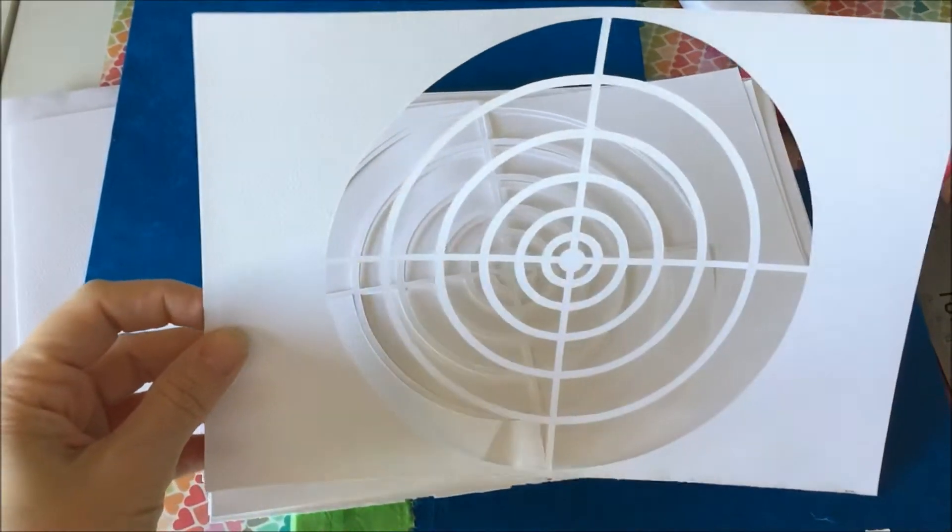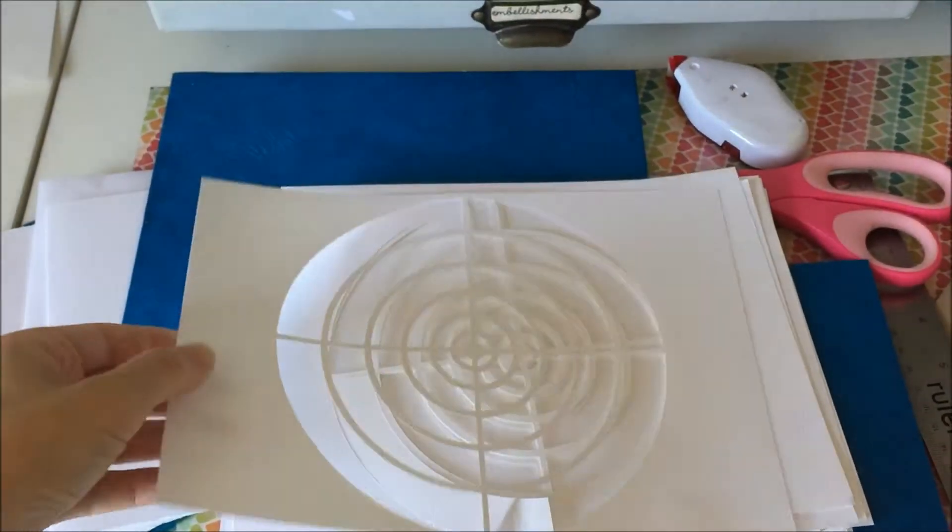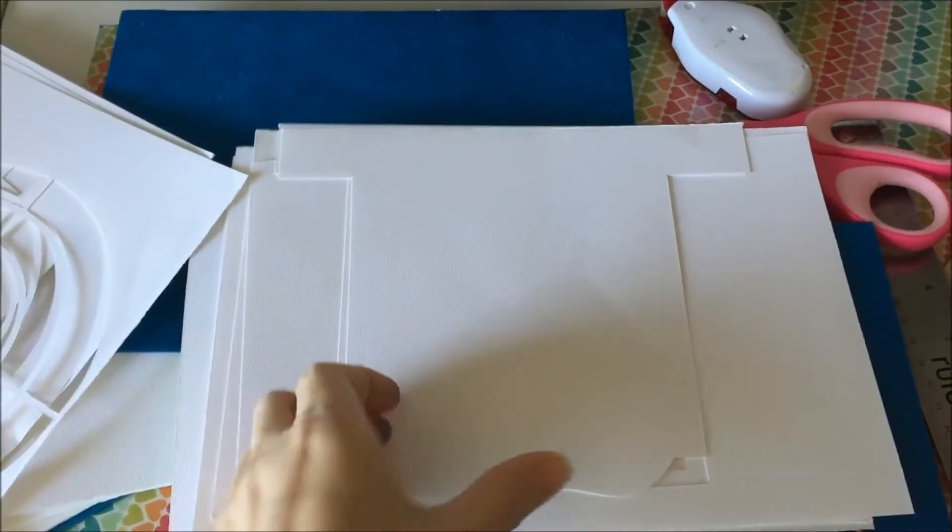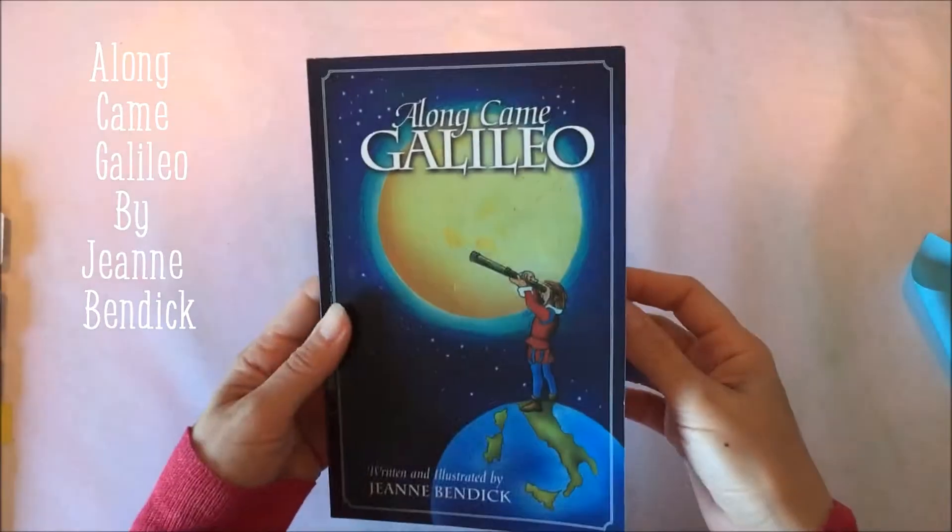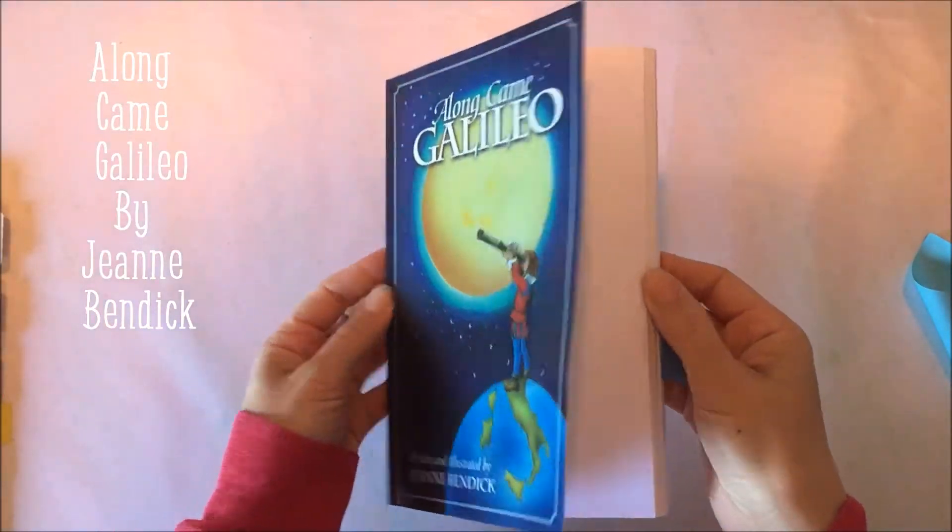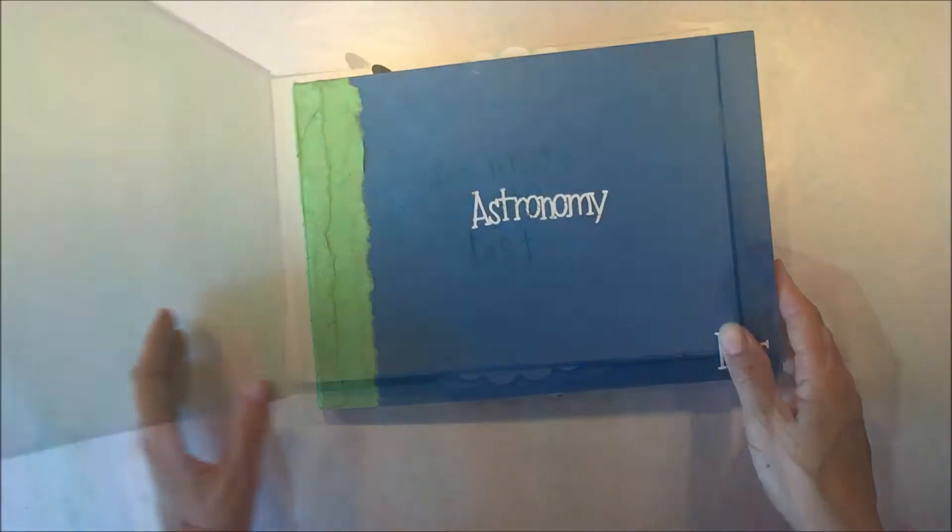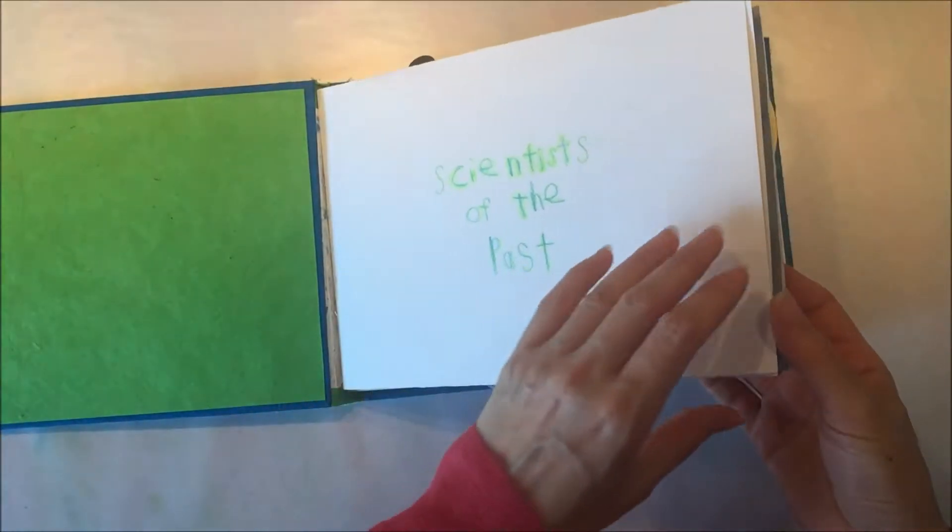And here are some of the cutouts that I made using the Silhouette Cameo that are going to go into the book. And that was easy to make with the Silhouette. So here's the book that we're going to use. We read the book and then we were inspired to make our own interactive book based on that book that we read.